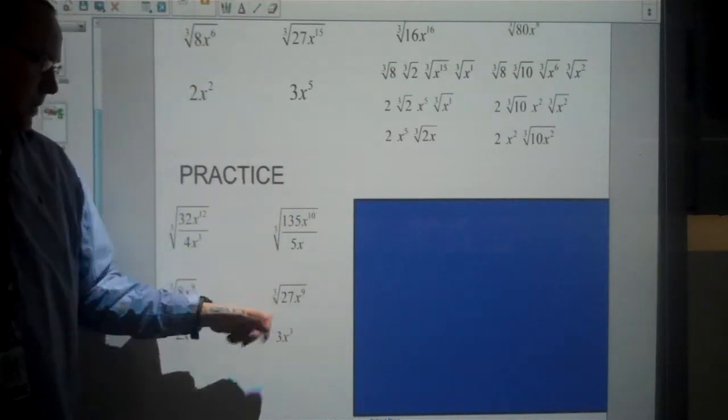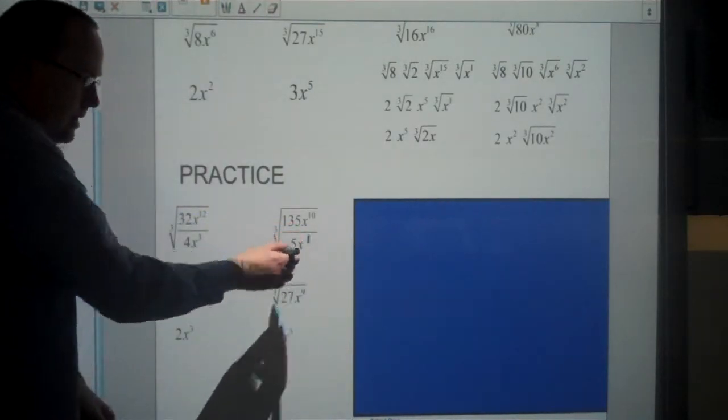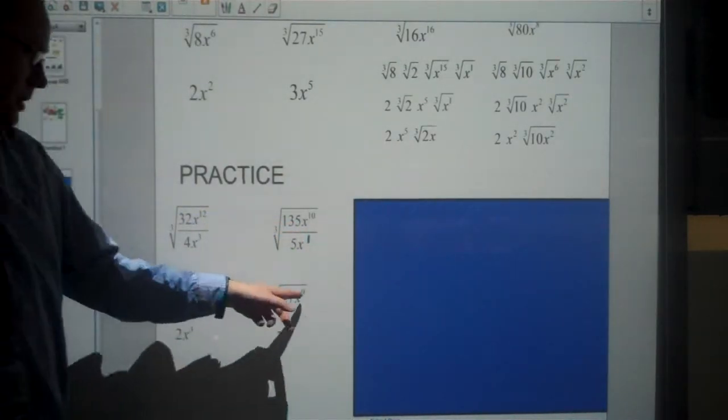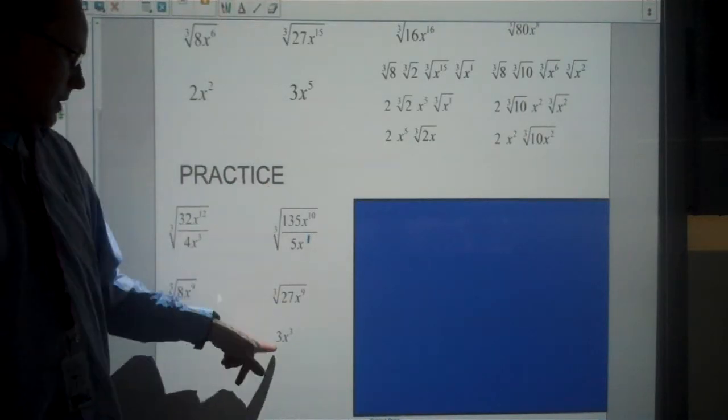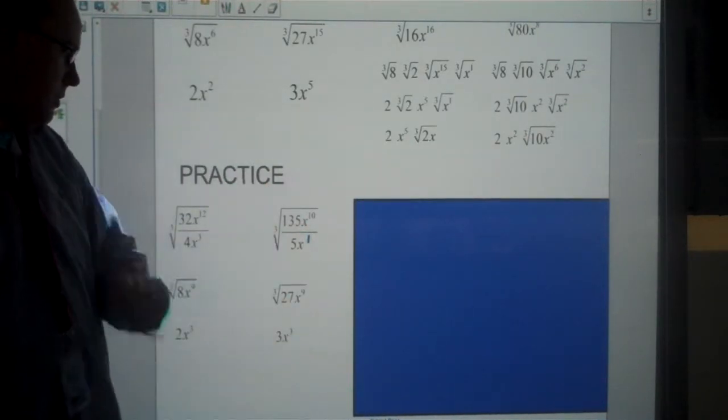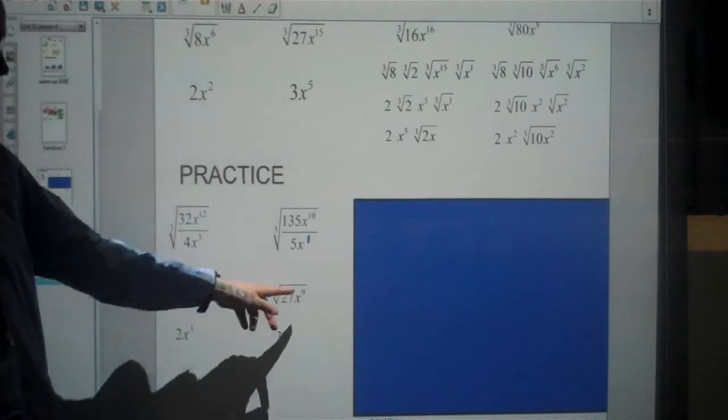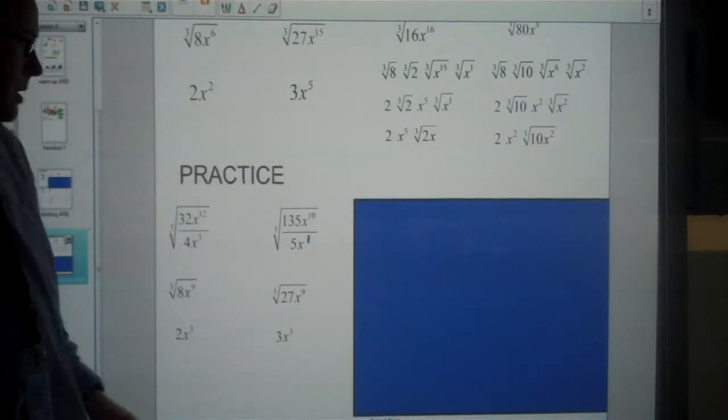135 divided by 5 is 27. x to the 10 divided by x to the 1 is x to the 9. The cube root of 27 is 3. And the cube root of x to the 9 is x to the 3, because 9 divided by 3 is also 3.